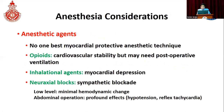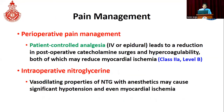Regarding anesthetic considerations, there is no single myocardial-protective anesthetic technique. Opioids are good for cardiovascular stability but may require post-operative ventilation. Inhalational agents can cause myocardial depression. Neuraxial blocks can cause sympathetic blockade — low-level blocks have minimal hemodynamic change, but those used for abdominal operations can cause profound hypotension and reflex tachycardia. Perioperative pain management is very important — patient-controlled analgesia administered intravenously or epidurally reduces the post-operative catecholamine surge and hypercoagulability, thereby reducing myocardial ischemia.